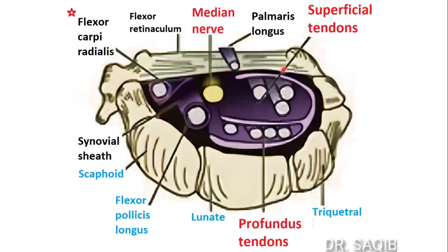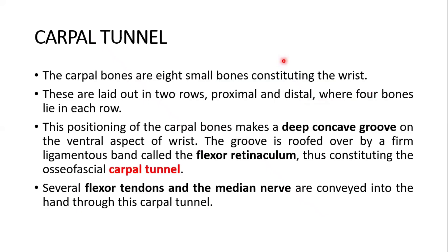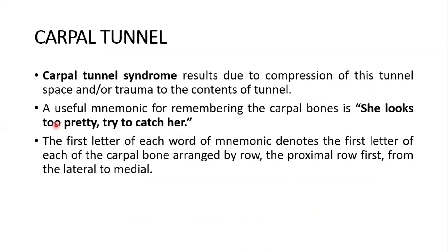This ligament is also called the transverse ligament of the wrist, or the flexor retinaculum. Several flexor tendons and the median nerve are conveyed into the hand through the carpal tunnel. Carpal tunnel syndrome results due to compression of this tunnel space or trauma to the contents of the tunnel.